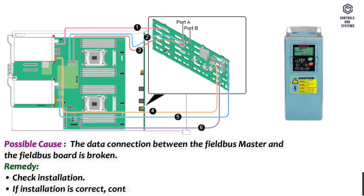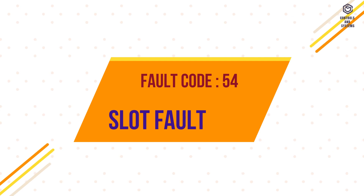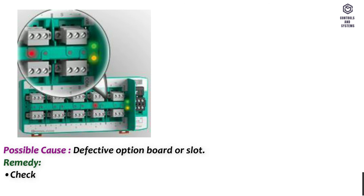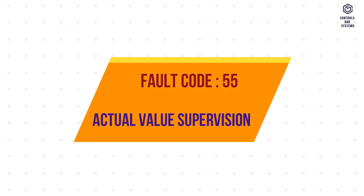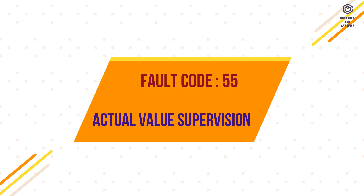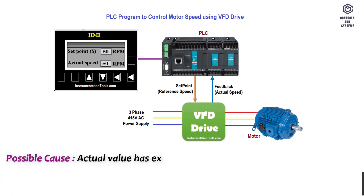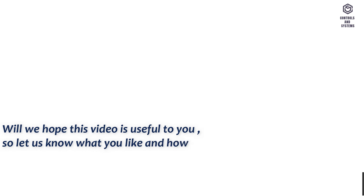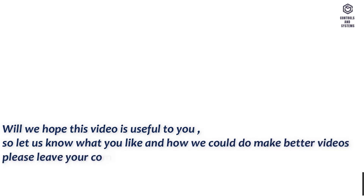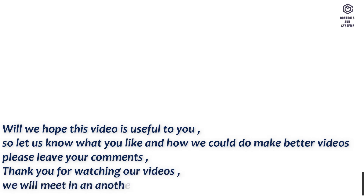Fault code 54 – Slot fault. Possible cause: defective option board or slot. Remedy: check the board and slot; contact technical support. Fault code 55 – Actual value supervision. Possible cause: actual value has exceeded or fallen below the actual value supervision limit. Remedy: check the process. We hope this video is useful to you — please leave your comments. Thank you for watching.